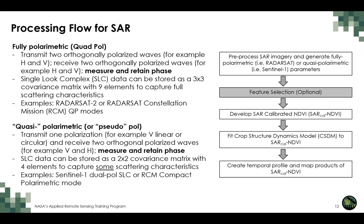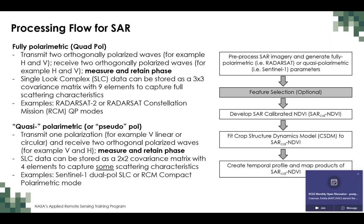On the right-hand side is a flow chart of the processes covered in this webinar. Emily will go through the pre-processing of the radar data. We will focus on Sentinel-1 data. Feature selection is an optional step. We will then provide an overview of developing the calibration between the radar vegetation index and NDVI, how to fit the radar vegetation index to a crop structure dynamics model, and how that model can provide daily estimates of crop condition.